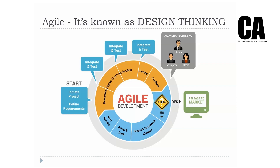Agile is also known as design thinking, and this is sort of how it works. It has its basis in RAD and the spiral method. You start at the early stages — you initiate your project, define your project requirements, then do your first development cycle. When you reach the end of your cycle, you should have complete working software. At this stage you integrate and test, then move on to the next part of the program. Every little section is fully completed for each agile cycle, and at the end it's tested.